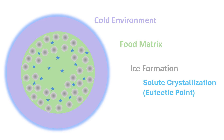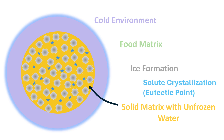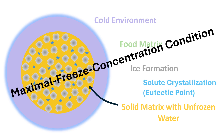At some stage all freezable water can form ice, and the solution matrix contains unfreezable water. Ice, solids, solutes, and unfreezable water are all present. At this stage all freezable water is transformed to ice — that is the condition of maximal ice formation. This stage is termed the maximal freeze concentration condition, and the remaining unfrozen water in the solid matrix is commonly defined as unfreezable water.